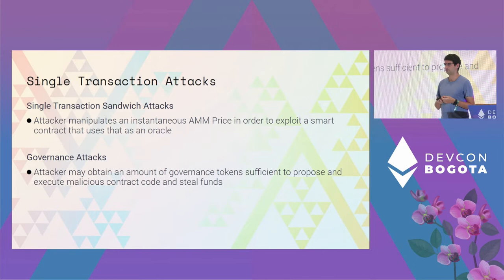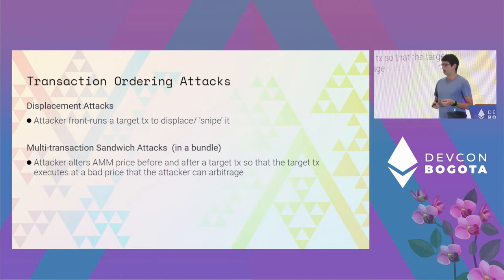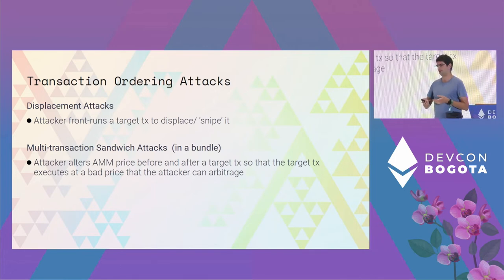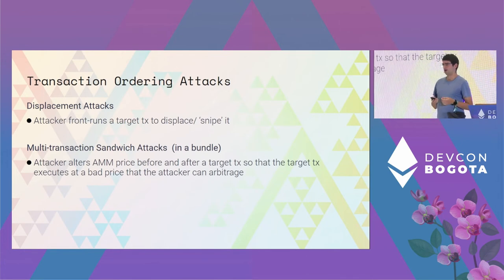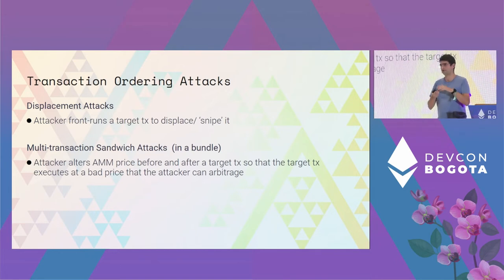Governance attacks can occur if it's possible to perform a governance action in one transaction — an attacker could borrow enough governance tokens and execute a malicious proposal. There are also transaction ordering attacks, or frontrunning attacks, where an attacker frontruns a particular transaction to capture profit. And multi-transaction sandwich attacks, where an attacker imbalances a pool before a victim's high-slippage swap to give them a bad price, then rebalances the pool to capture the victim's losses.